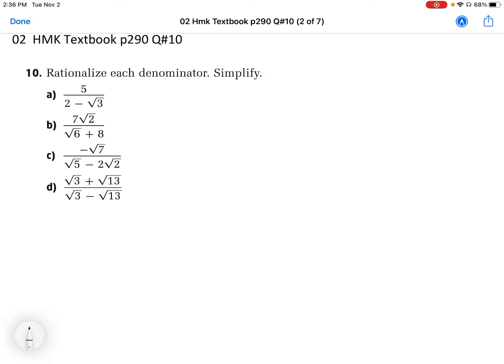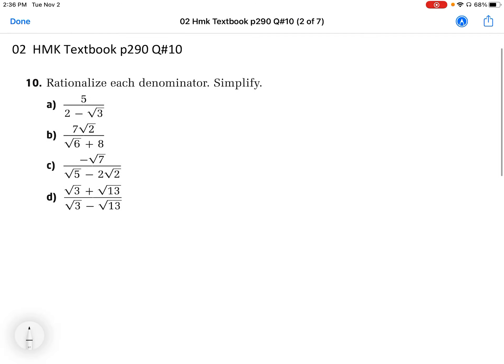For rationalizing the denominator, these are binomial denominators, so we need to use what we call a conjugate pair. Okay, so in this case here I'm going to do a, and in a...